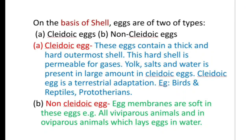Lastly, on the basis of shell, eggs are of two types: cleidoic eggs and non-cleidoic eggs. Cleidoic eggs have a thick and hard outermost shell that is permeable to gases; yolk, salt and water are present in large amounts, making these eggs self-sufficient. Cleidoic eggs are a terrestrial adaptation — examples include eggs of birds, reptiles and prototherians. In contrast, eggs with soft egg membranes are non-cleidoic eggs, found in all viviparous animals and also in oviparous animals that lay eggs in water.